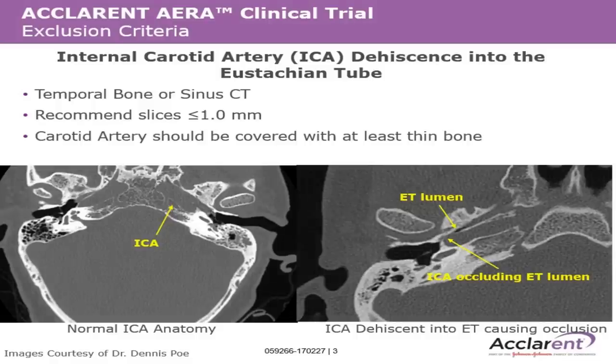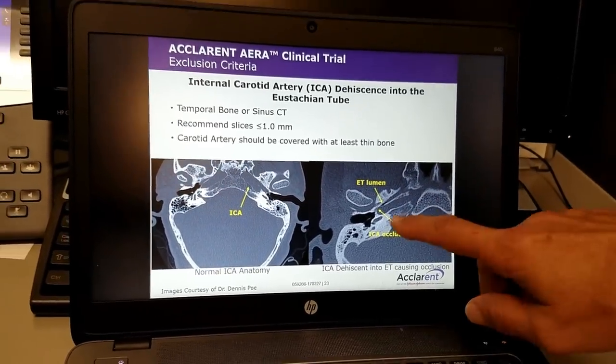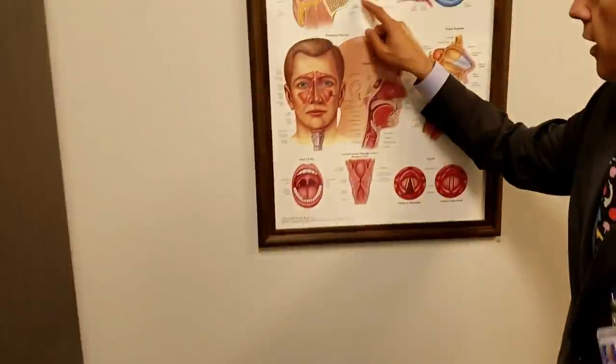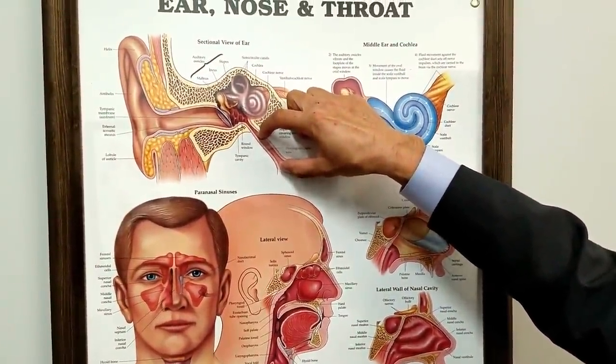Dr. Poe has told me he's had one patient where overcorrection was permanent — I haven't had that happen yet. Overcorrection causes autophony, an echoing sound where you hear yourself speak in your ear. Probably the scariest risk is proximity to the internal carotid artery — in some cases it sits very close to the eustachian tube. The devices are designed to keep you away from it, but there's always that theoretical risk. All in all, this is a very straightforward procedure and about 70% of patients are happy they had it done.